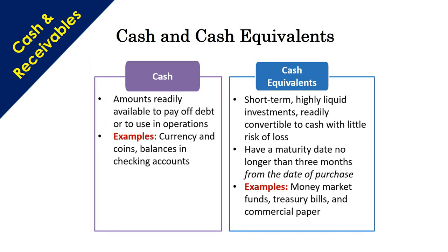The first one is cash. Cash is the amount that is readily available to pay off debt or to use in operations. Currency and coins, balances in checking accounts, and cash equivalents are short-term highly liquid investments, readily convertible to cash with very little risk of loss. If we can convert an investment into cash within three months, that is a cash equivalent. Examples include money market funds, treasury bills, and commercial papers.